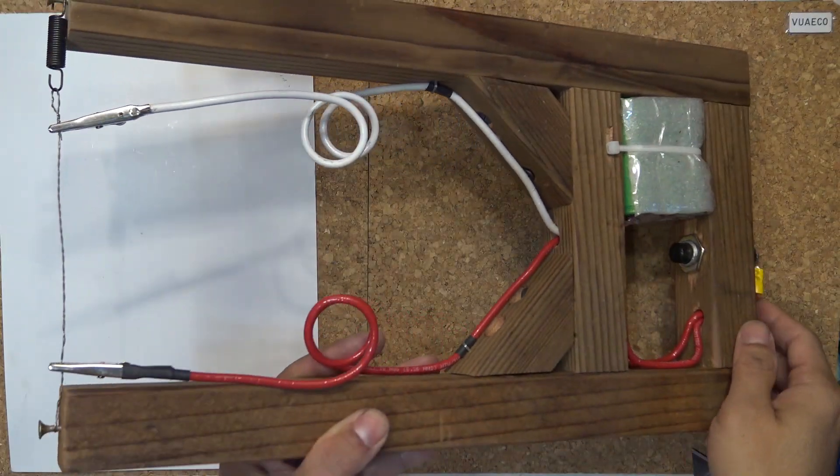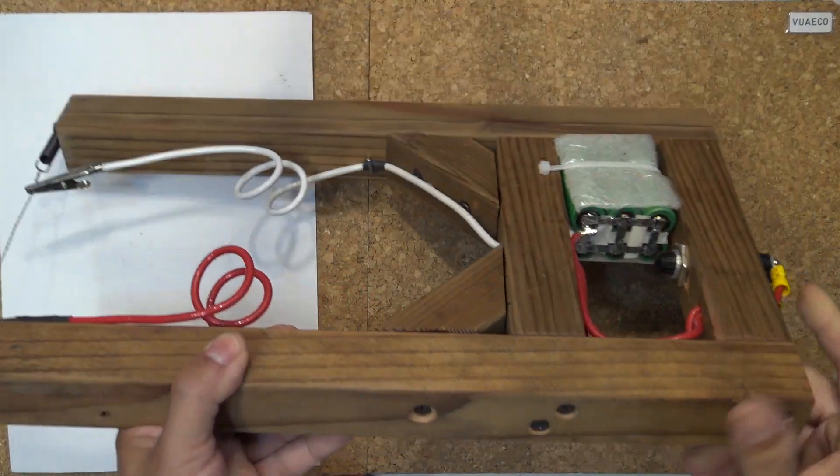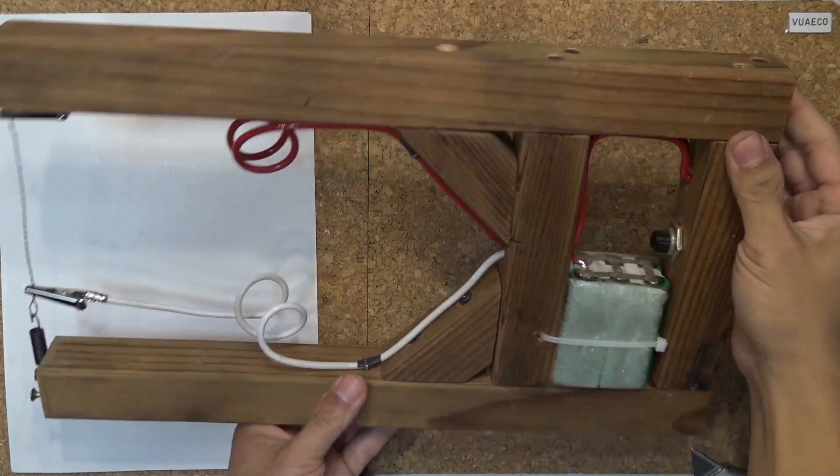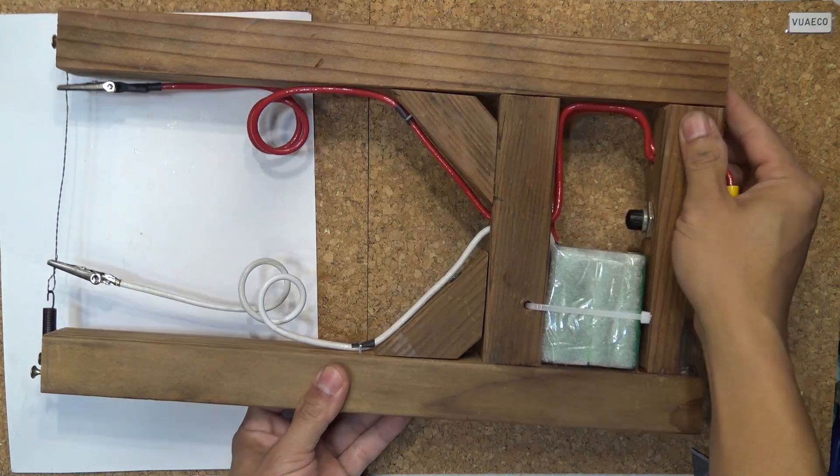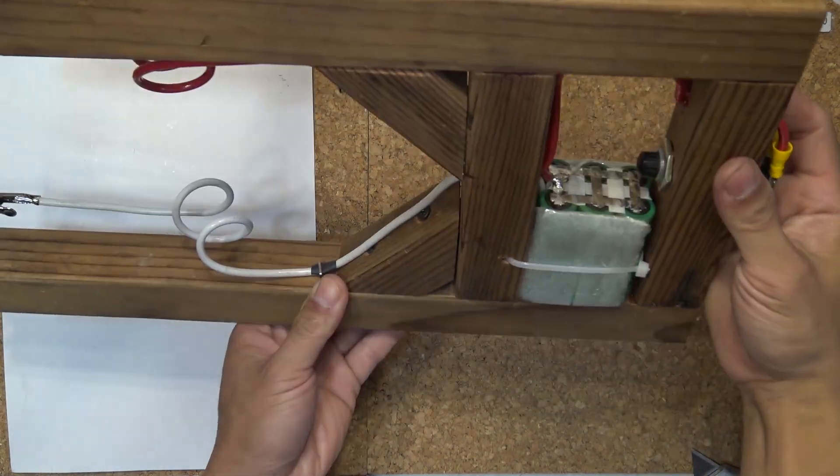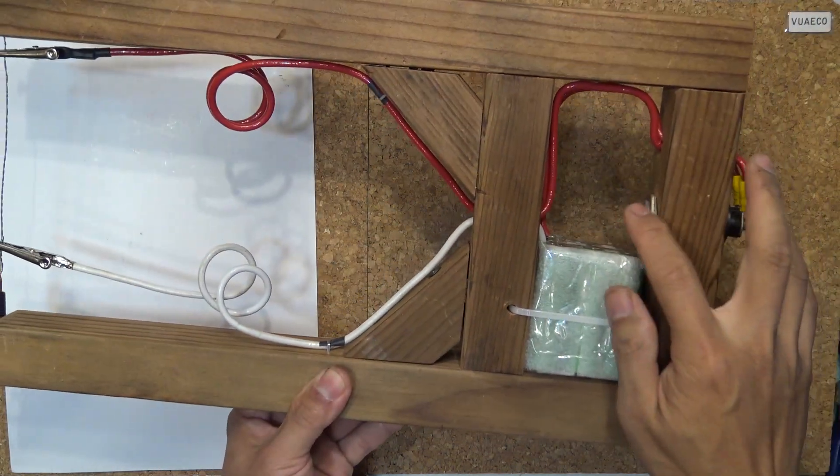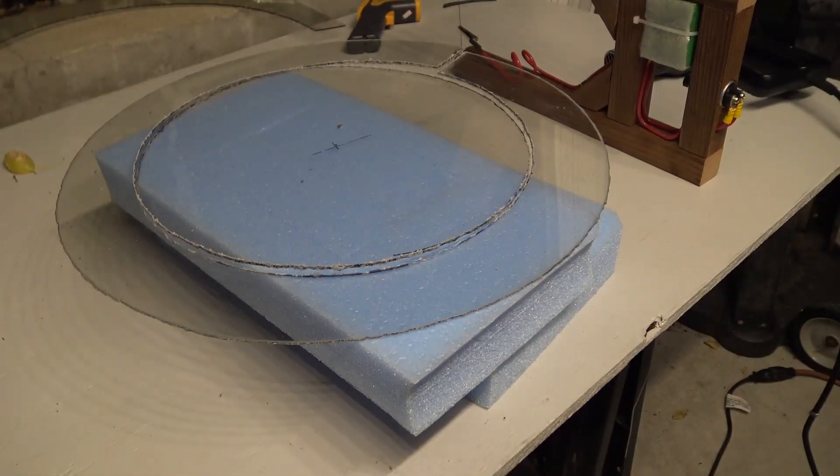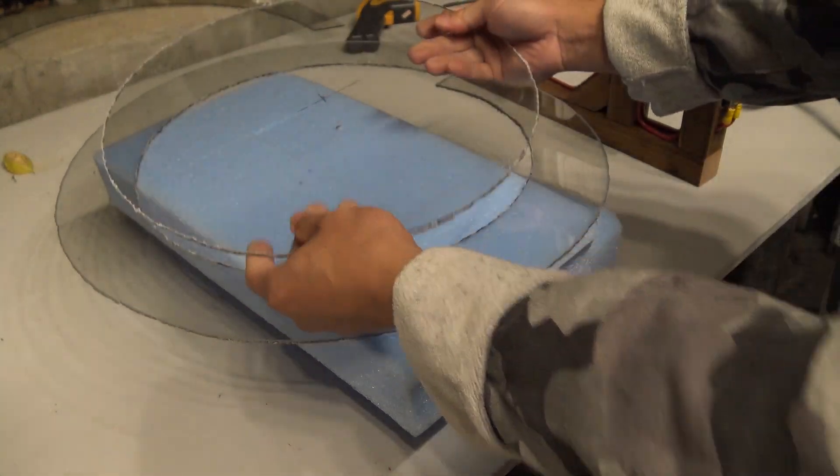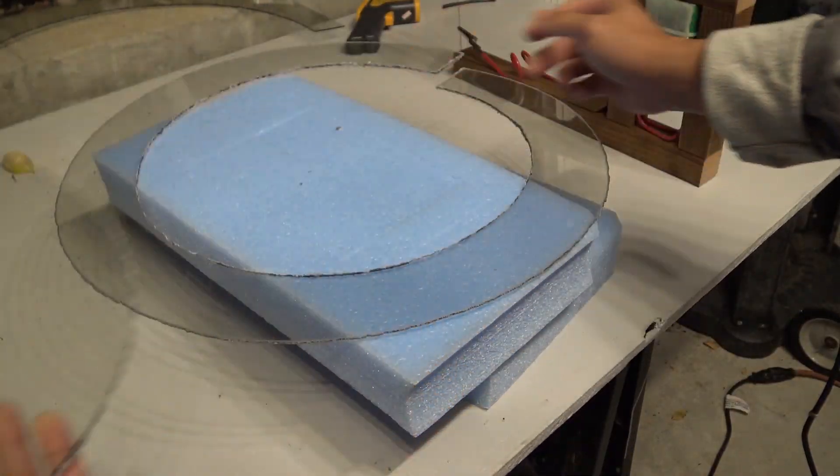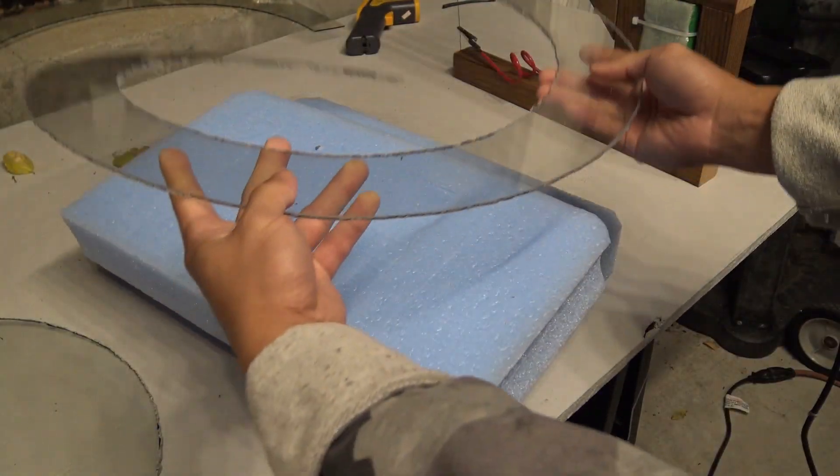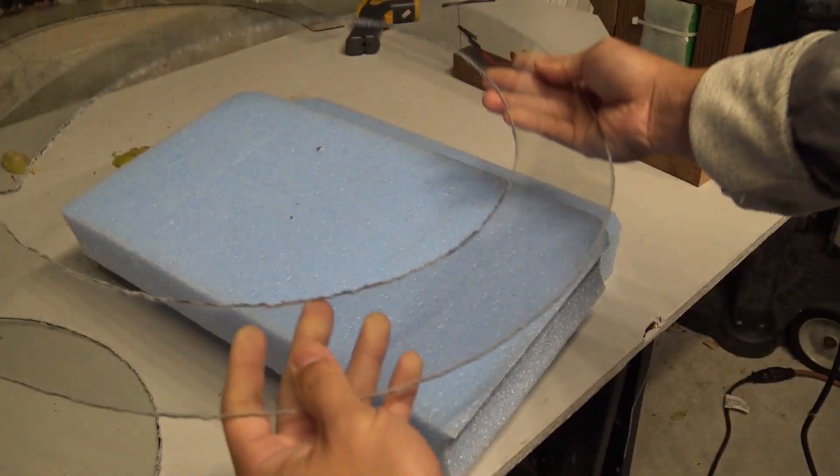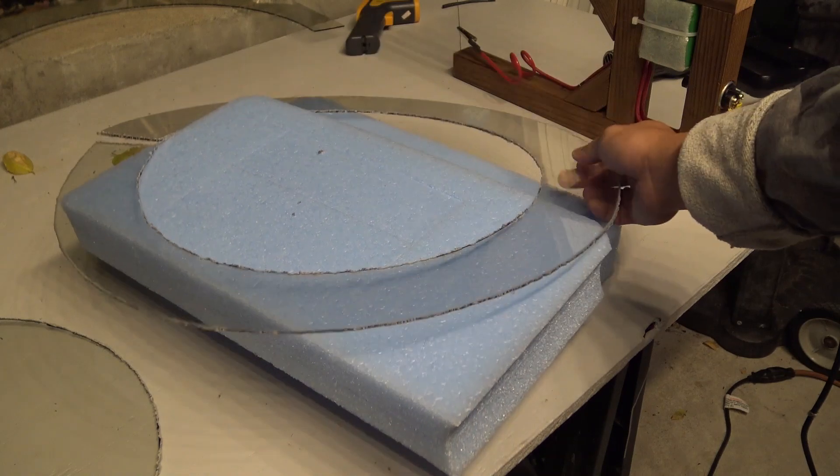There you have it. A homemade plexiglass cutter. Very simple and easy to make. Just some spare scrap wood, couple batteries, actually six batteries, a power button, some wiring and a ni-chrome wire. And you can easily cut into any shapes that you want. I have cut my plexiglass into some cool shapes for my next project. Stay tuned as I have some very interesting projects coming up for these plexiglass pieces. And I'll see you next time.